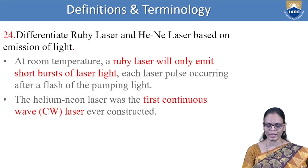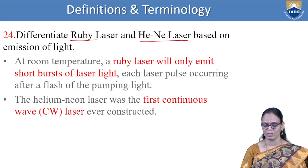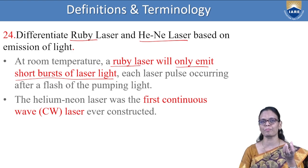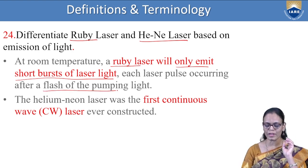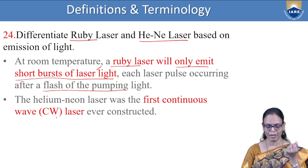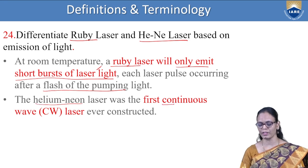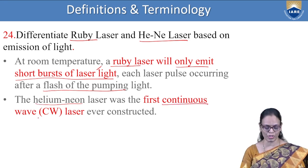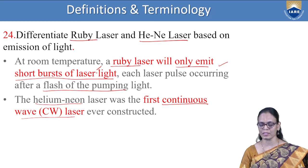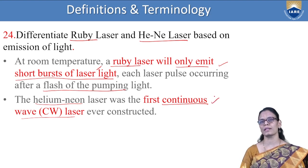How do we differentiate ruby laser and helium-neon laser? Ruby laser emits only short bursts of light because it uses a flash lamp — whenever there are flashes, atoms receive the energy, giving a short burst of laser light. Whereas in helium-neon laser, it is a continuous laser — it was the first continuous laser ever constructed. The major difference is that ruby laser is intermittent and not continuous, while helium-neon laser is a continuous laser.